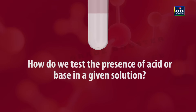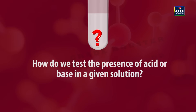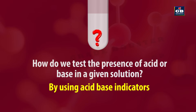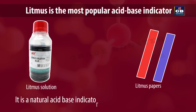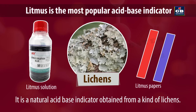Then how do we test the presence of acid and bases? We can test the presence of acid or base using acid-base indicators. Litmus is the most popular acid-base indicator. It is a natural acid-base indicator obtained from a kind of lichens.